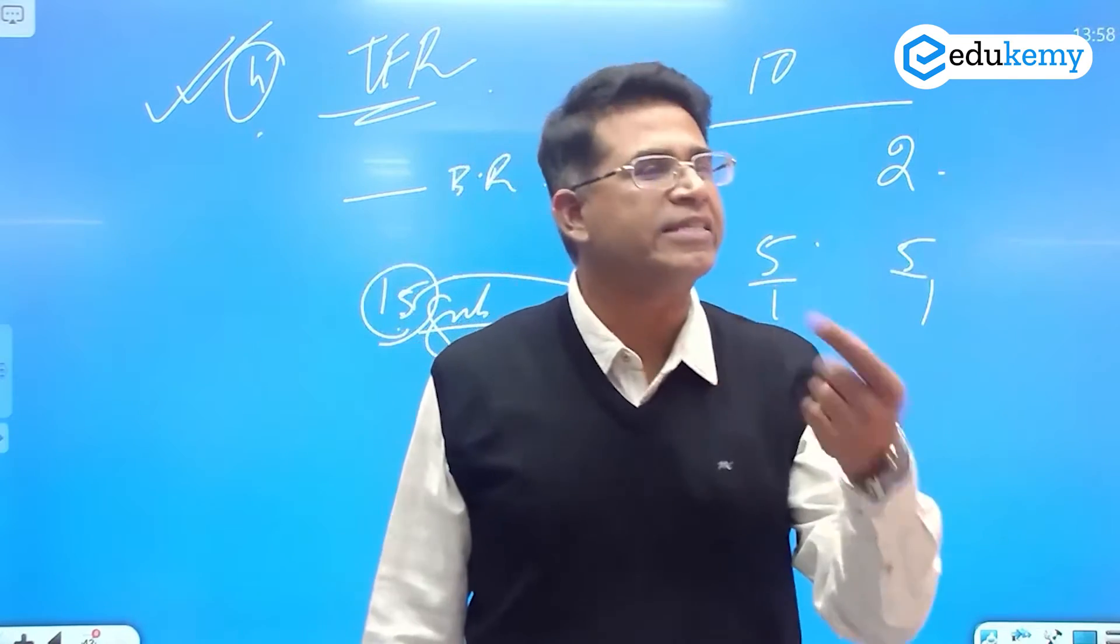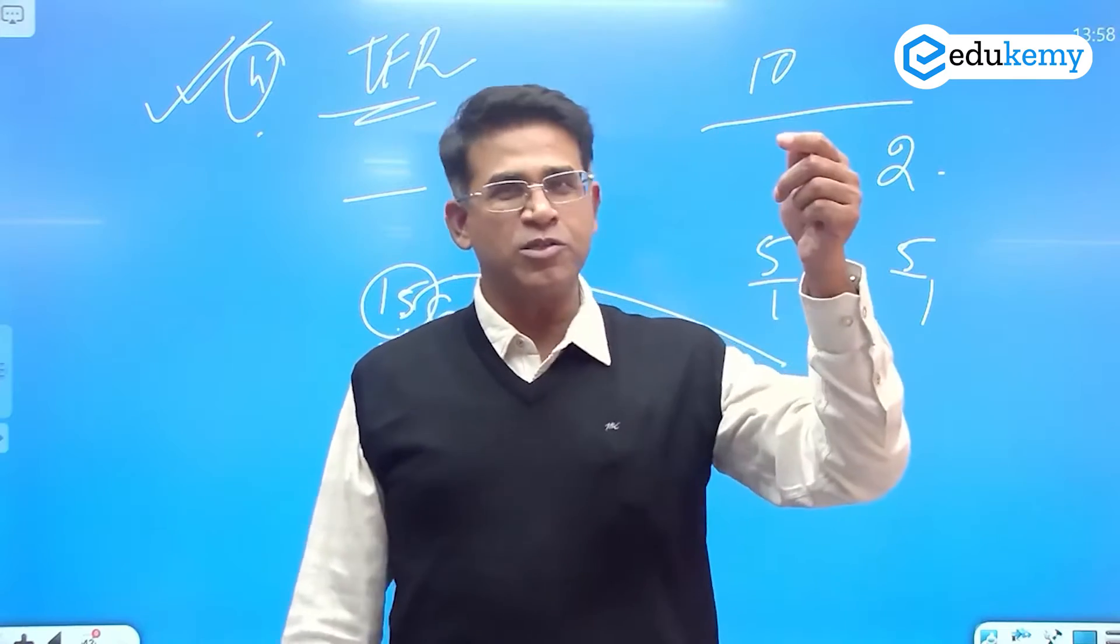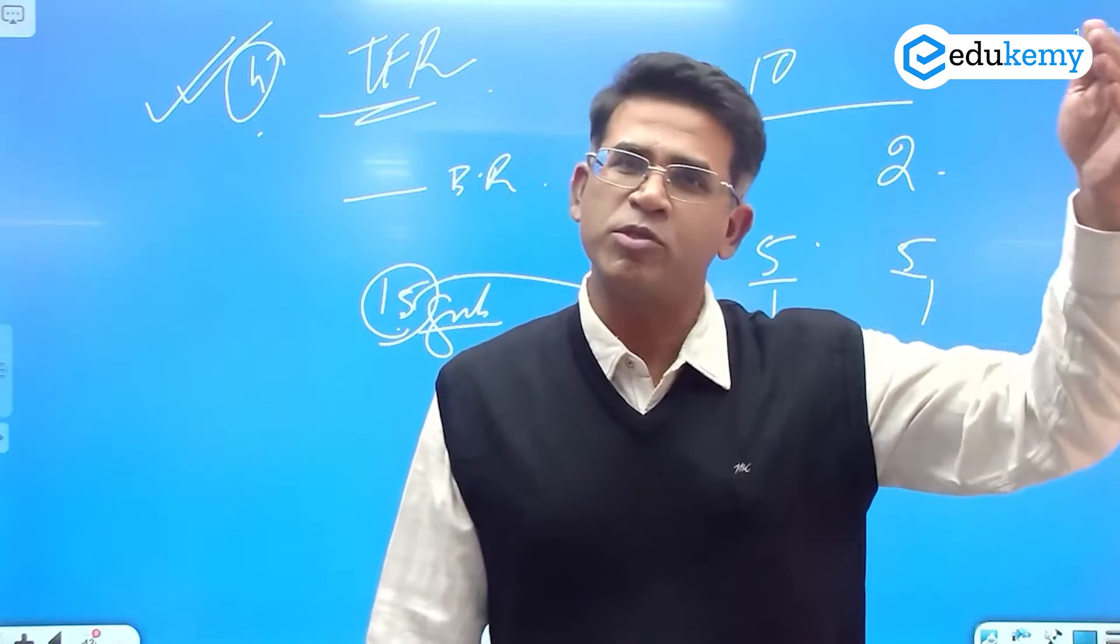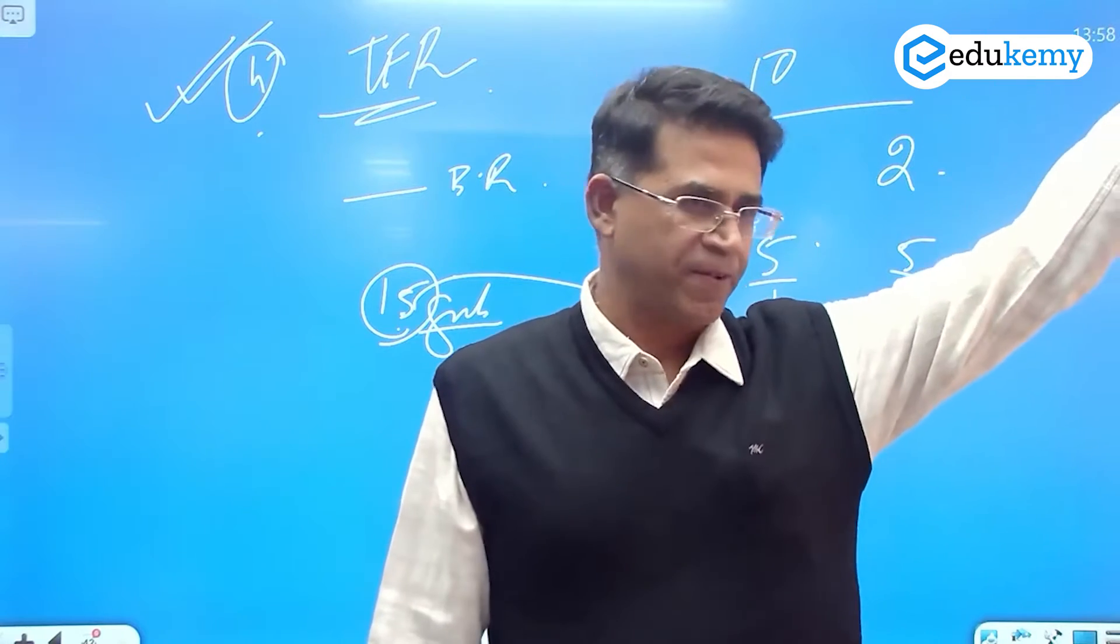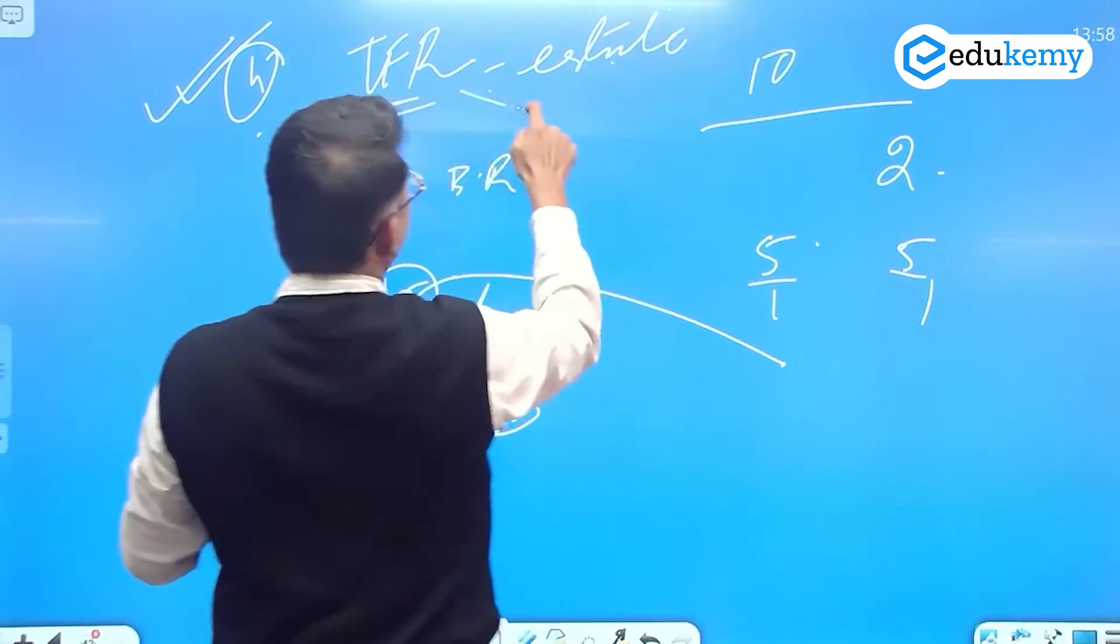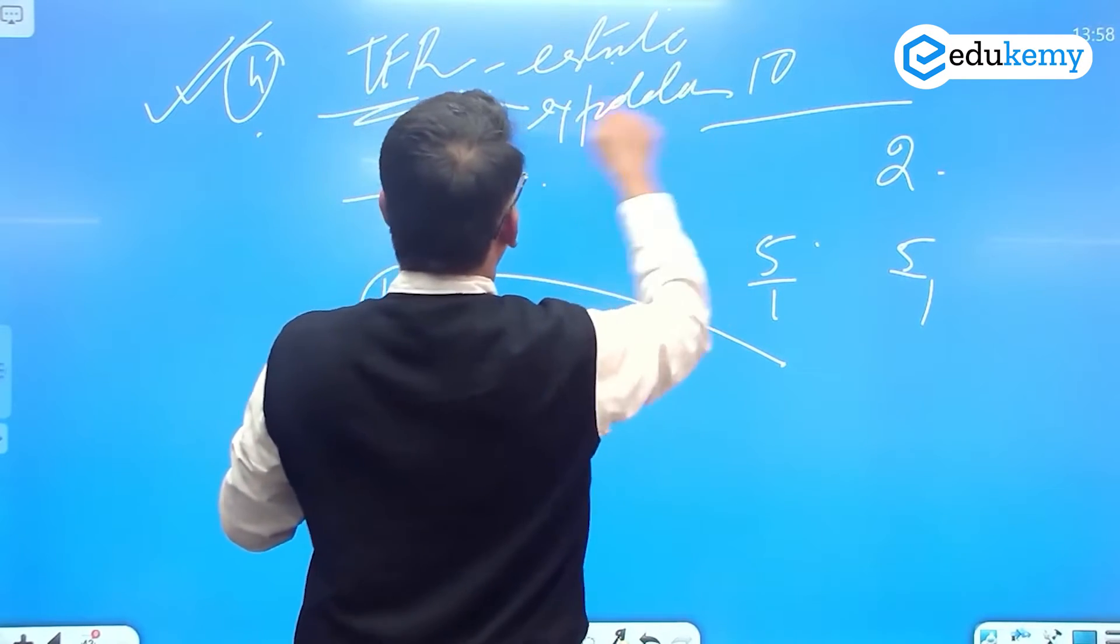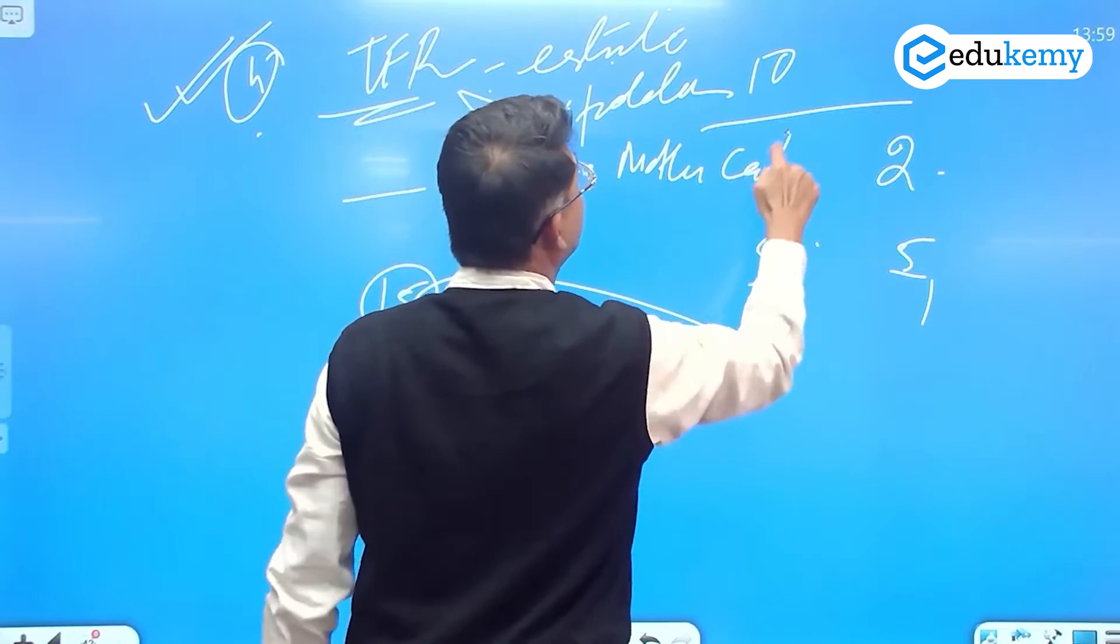TFR is an estimate. TFR tells us how a society is changing in terms of its development social parameters. TFR, yaa dhekna, TFR is an estimate. TFR is a type of extrapolation. TFR is mathematically calculated.